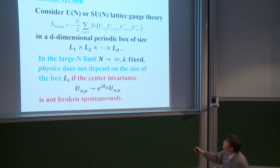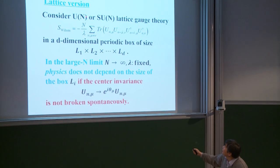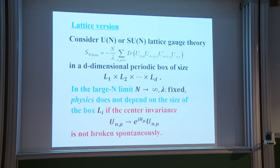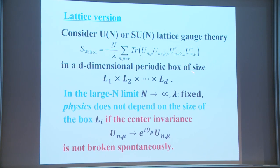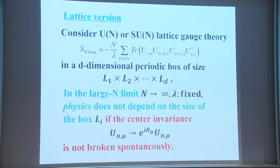This is the lattice version. We consider U(N) or SU(N) lattice gauge theory with the ordinary Wilson action in a d-dimensional periodic box of size L1 × L2 × ... × Ld. The statement is that in the large-N limit, with N going to infinity with lambda fixed, physics does not depend on the size of the box Li, if the center invariance — U_Nμ going to some phase multiplied by U_Nμ — is not broken spontaneously.